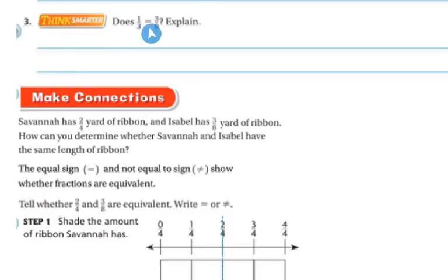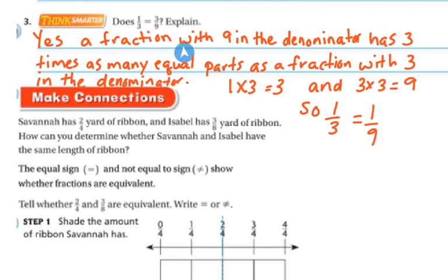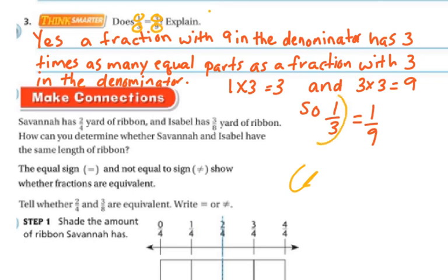Think: does one-third equal three-ninths? Yes. A fraction with nine in the denominator has three times as many equal parts as a fraction with three in the denominator. For example, one times three is three, and three times three is nine. So one-third and three-ninths are equivalent.